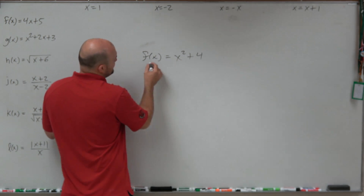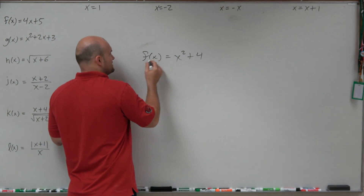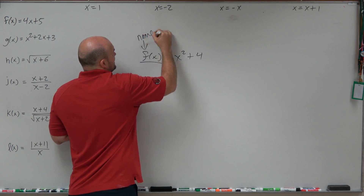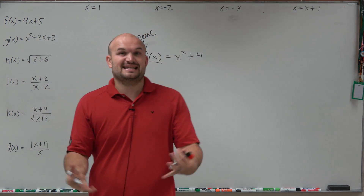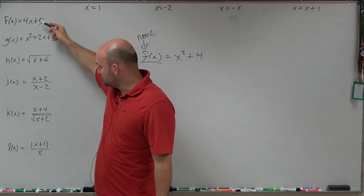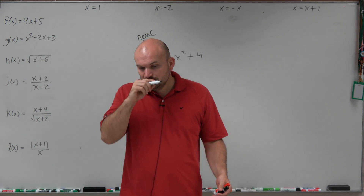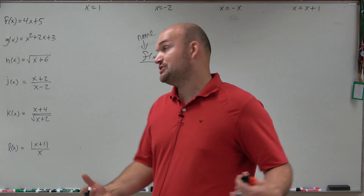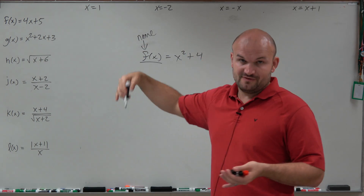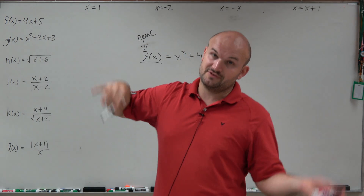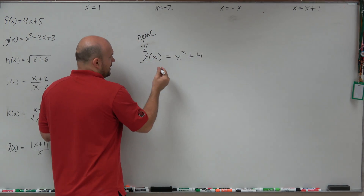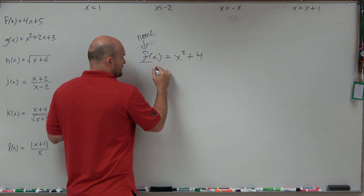We have this f of x. The f is going to be like the name — just like I have a name and you have a name, all these functions we can give them different names. We use different names to differentiate one function from another. You can see how f of x is different than g of x, and g of x is different than h of x. So that basically applies to the name: f of x, g of x, and so forth.